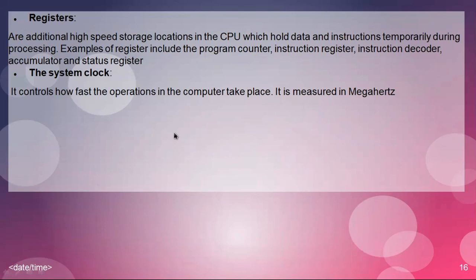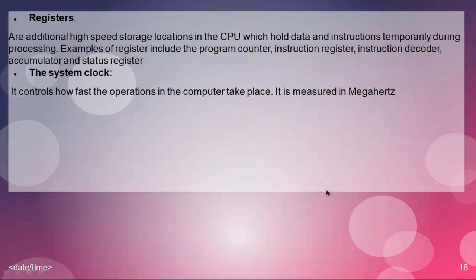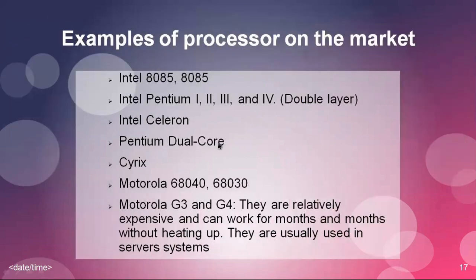The system clock controls how fast operations in the computer take place — how long the computer takes to process data or information. It is measured in megahertz (MHz), and this is what we refer to as processor speed when buying a computer in the market.